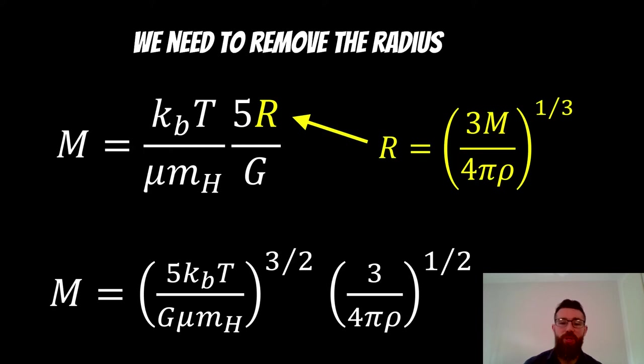So we can use the relationship between the radius, mass, and density of a sphere and put that in terms of mass and density instead. And when we do that, again, we're going to have mass on both sides of the equation.